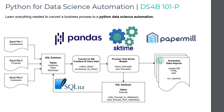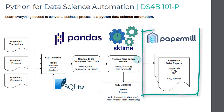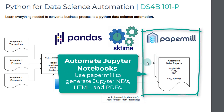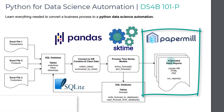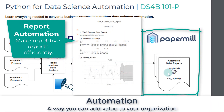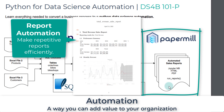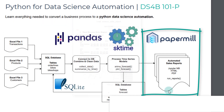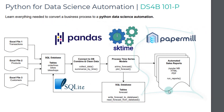Then we're going to take it to the next level, converting our forecasts to documents using a tool called papermill. We'll be converting to Jupyter notebooks, HTML, and PDFs with a run-reports function that you will create. And that is going to be our workflow that you'll be developing in this course.